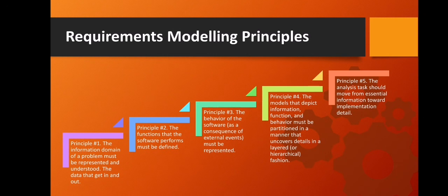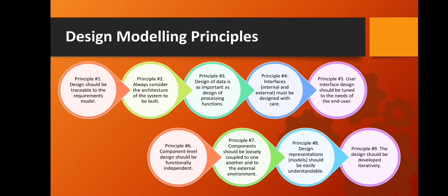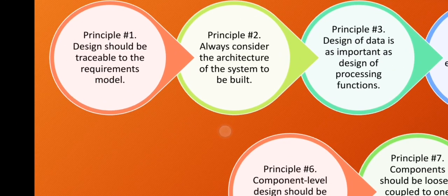Those are the requirements model principles. Now we go to the nine design modeling principles. Principle one: design should be traceable to the requirements model — the design model translates the requirements model into an architecture. Principle two: always consider the architecture of the system to be built — it is the skeleton of the system. Principle three: design of data is as important as design of processing functions — the way data objects are realized matters.